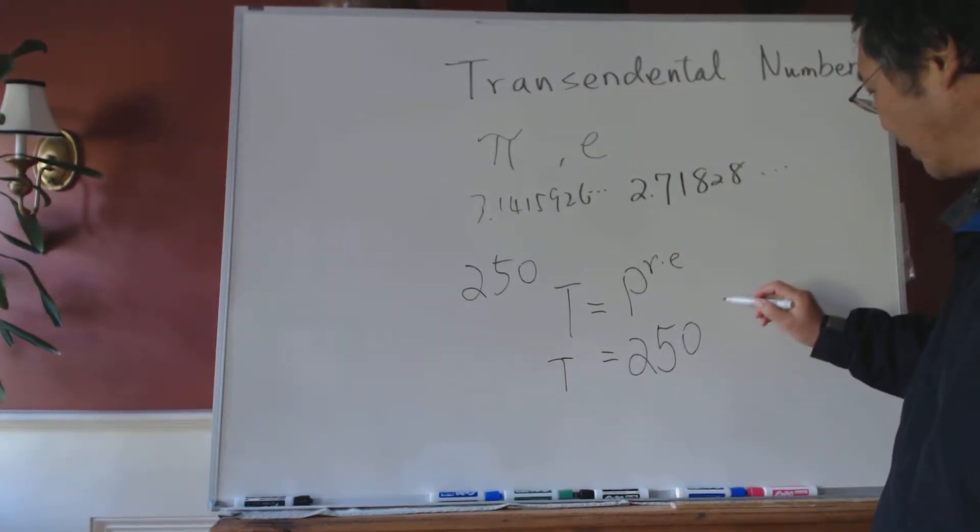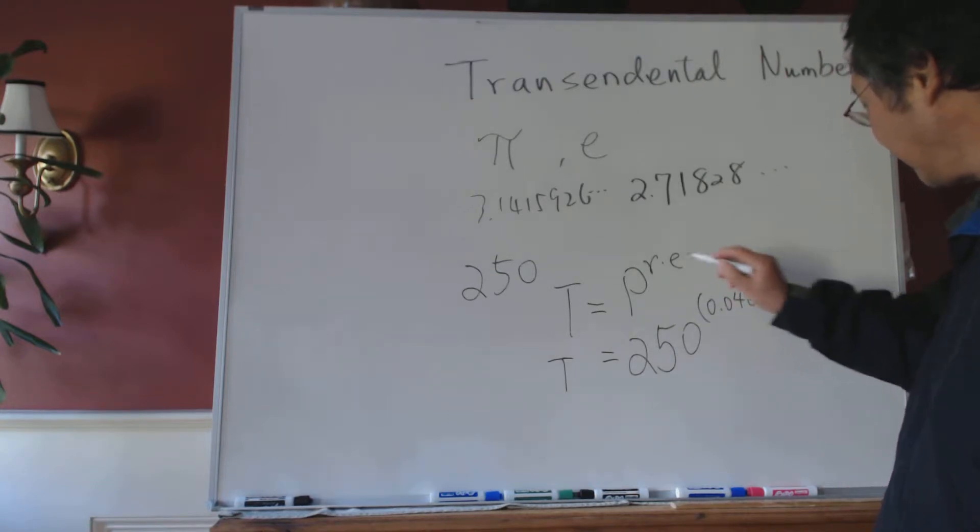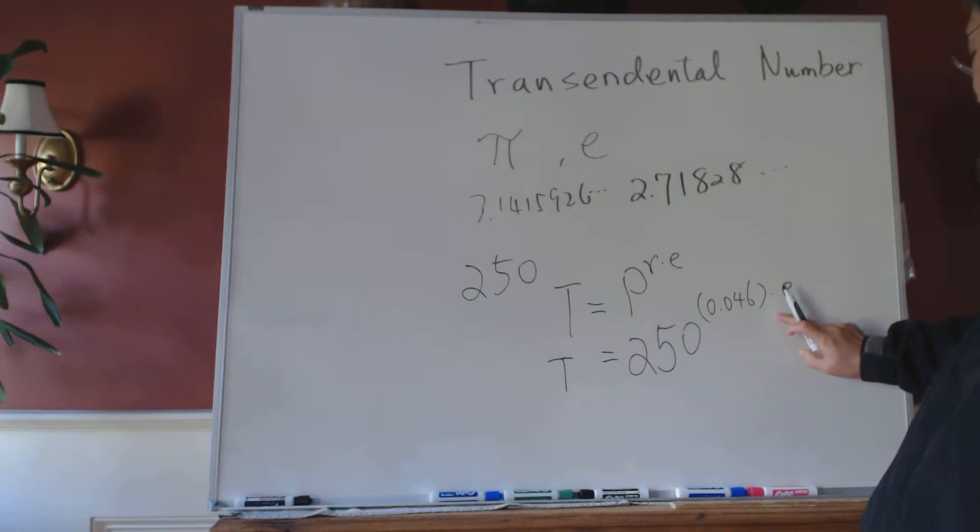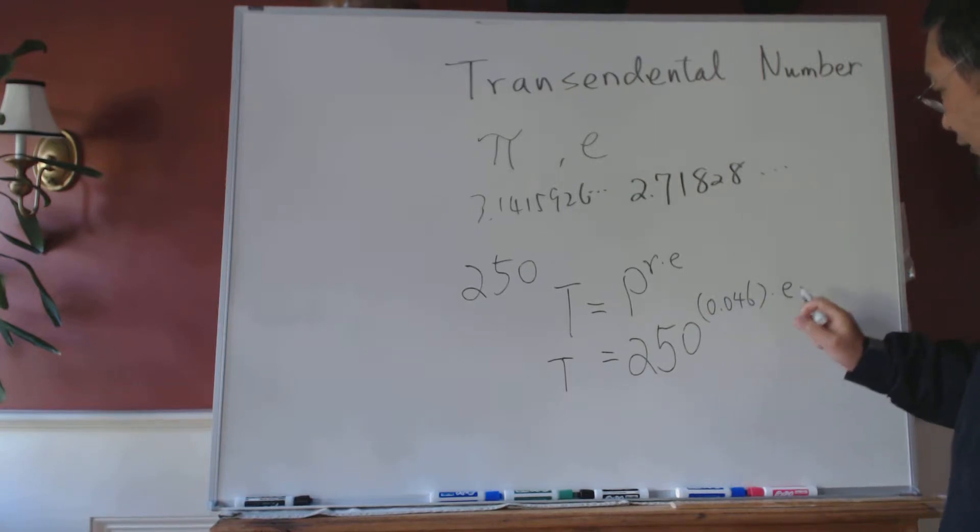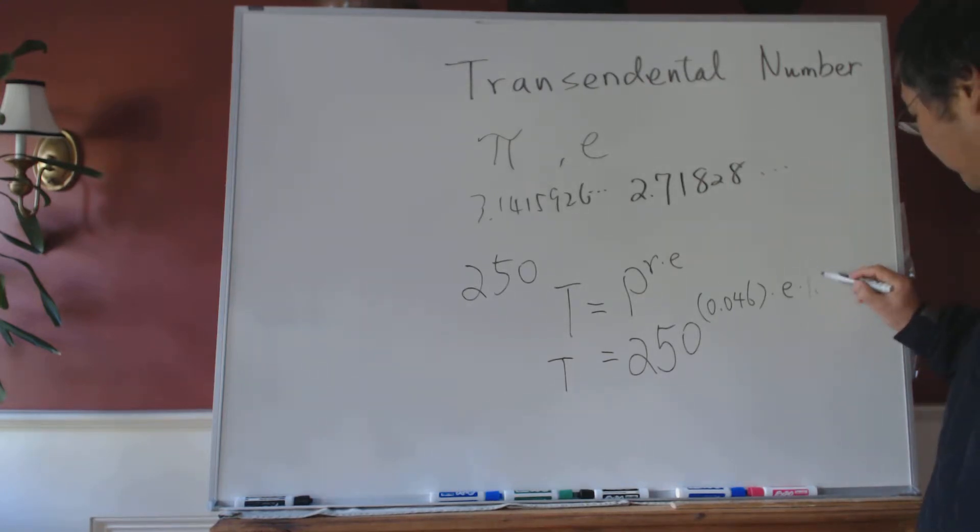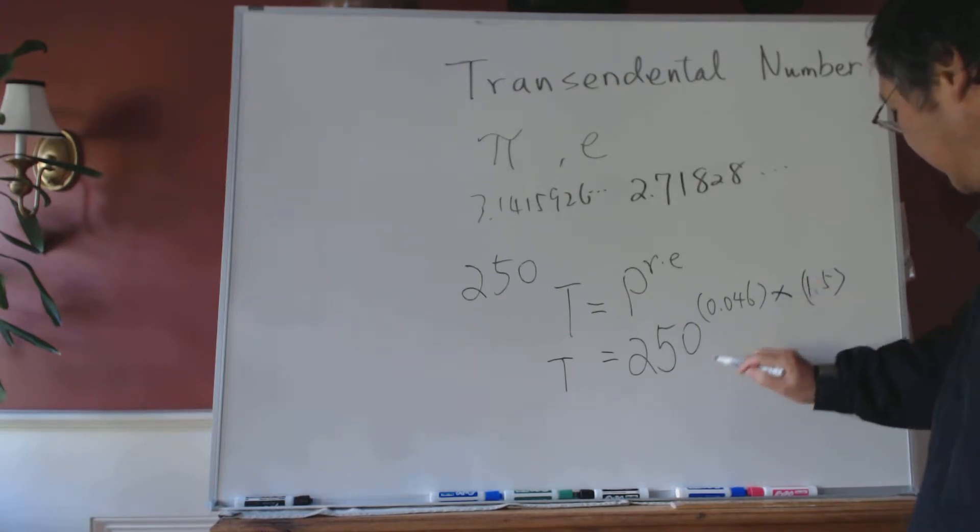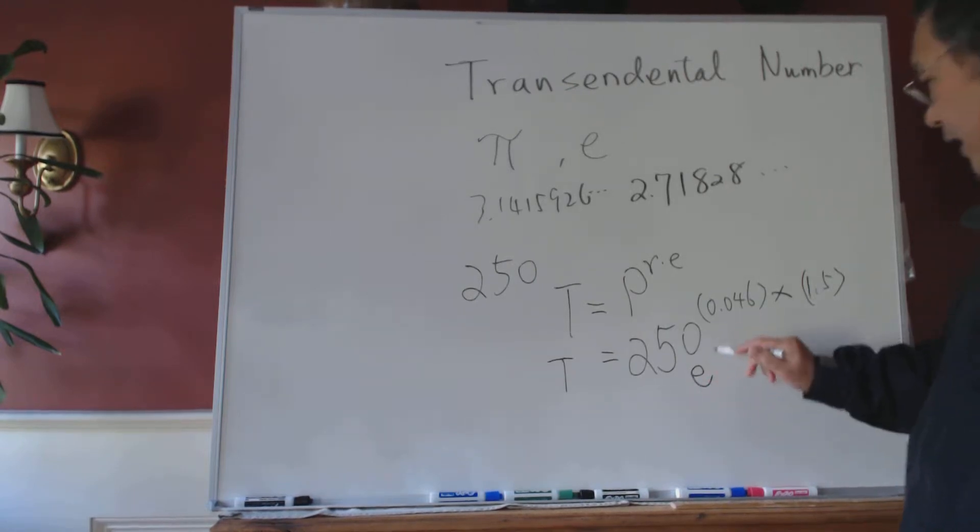If you know that, the formula should be the total number equals the population times e to the power of the rate times time. For this one, for the total we have, we don't know. For the population, we know it's 250. The rate is 4.6%, so it's 0.046. And this e is, we know the number. So this one times, let me see. Time, 36 hours is, because 4.6 is by day, so it should be how many days? 1.5 days. The rate should be like this, it should be in the base here.